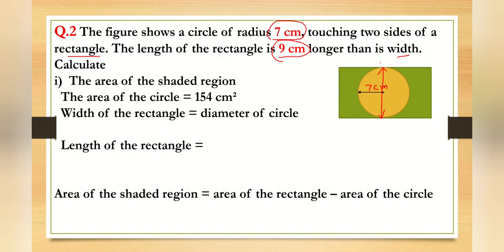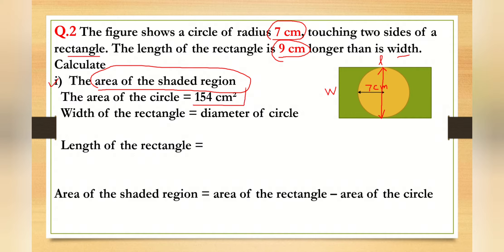Here L is the length and W is the width. Because the circle is touching two sides of the rectangle, the width of the rectangle equals the diameter of the circle. The area of the circle is 154 square centimeters — you can check my previous video for that calculation.